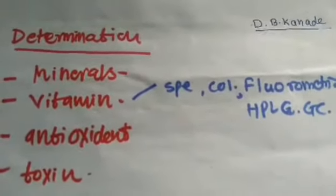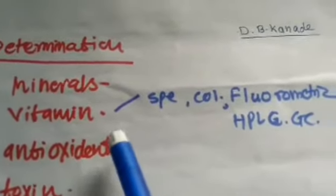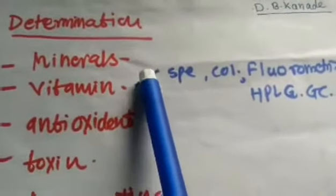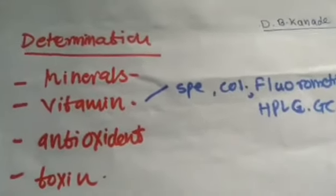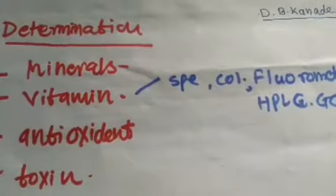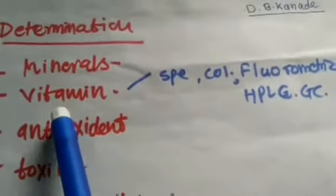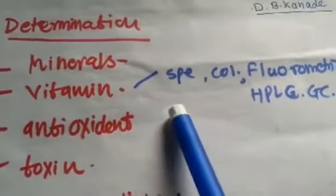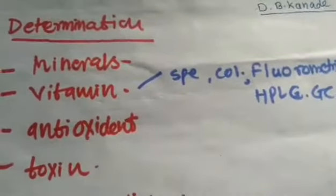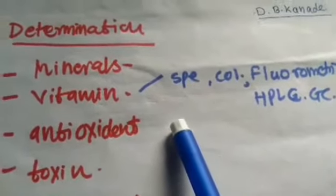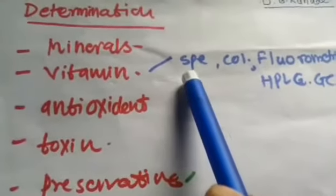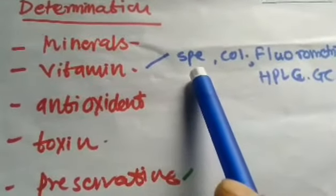Today we will discuss the estimation of vitamins, minerals, and antioxidants in food. Vitamins are estimated by using spectrophotometer, HPLC, or fluorometer. We will first see the vitamins estimated by spectrophotometer.